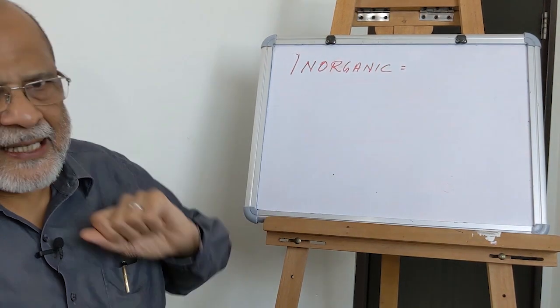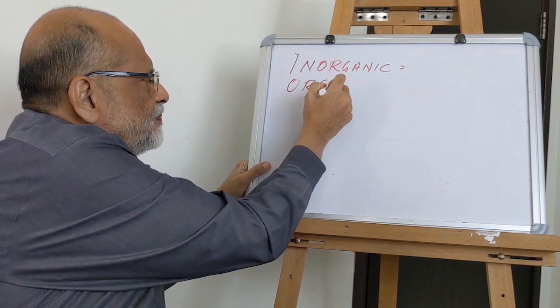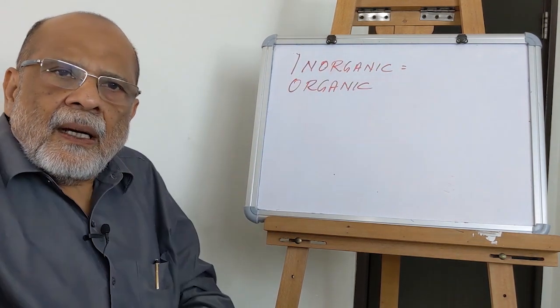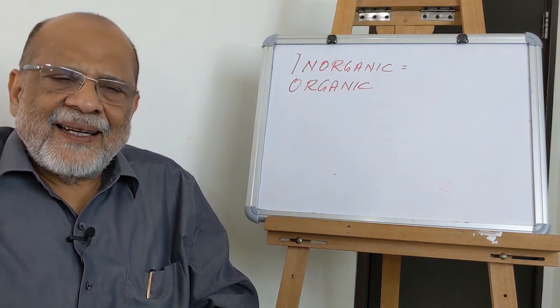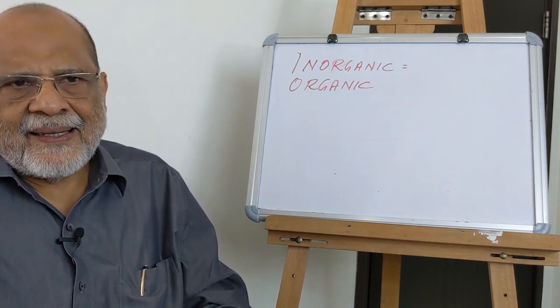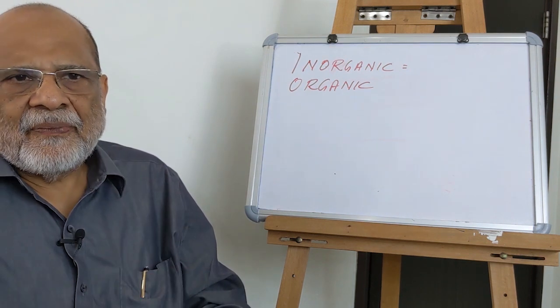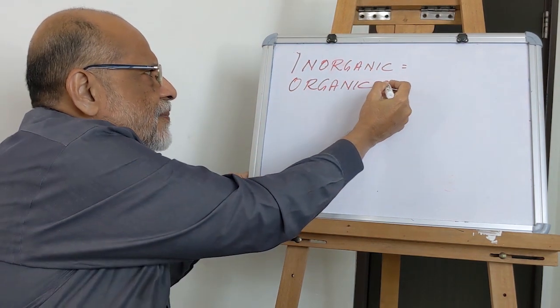So that's the inorganic substances. And then we have the organic compounds. Now what are these organic compounds? Sometimes we tell the amino acids, the fulvic acids, the humic acids. All these components are called as organic components.